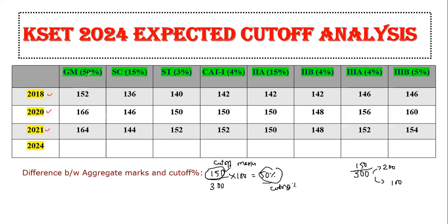The reservations are for general merit, SC, ST, category 1, 2A, 2B, 3A, and 3B — cutoff marks will vary accordingly. Based on these three years of cutoff marks, we will estimate the cutoff marks for 2024.